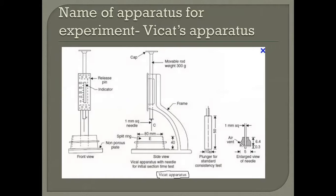At front view, we can see the indicator above the scale marked here, and we have the reducing pin and we have split mold there and non-porous plate also.